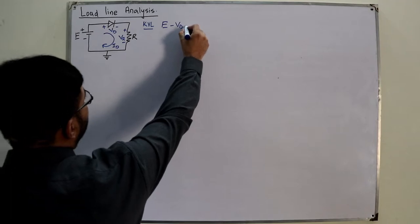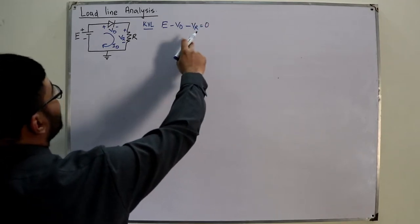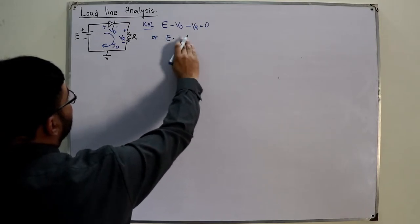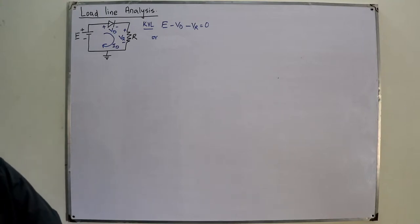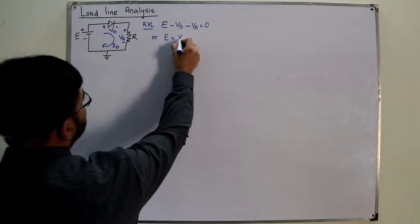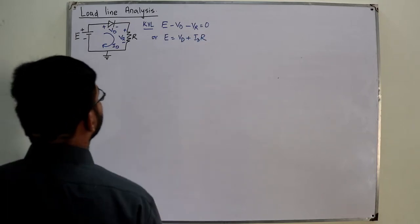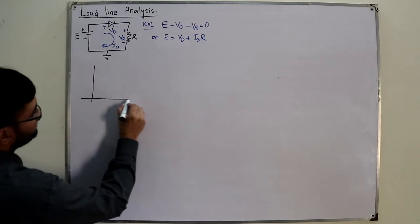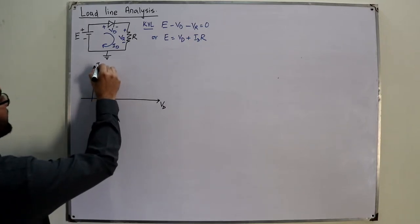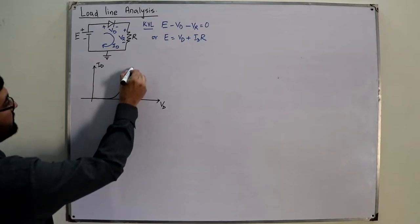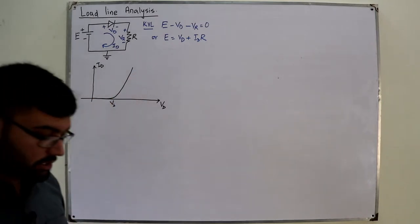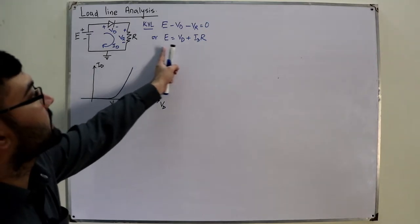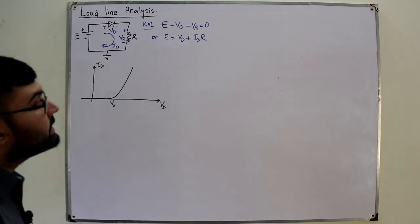From KVL we get: E equals VD plus ID times R. So we have two variables — VD, the voltage across the diode, and ID, the current through the diode. These are the same variables as in the diode characteristics curve, where we show the knee potential or barrier potential. The load line is obtained from this circuit equation.